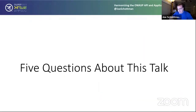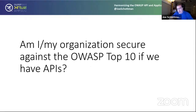To let you know what this talk is about, I'm going to start with five questions. The first: am I or my organization secure against the OWASP top 10 if we have APIs? I work in banking, so we're highly regulated and get questions from auditors like that. In 2019 OWASP brought out an API-specific top 10 list, but there's overlap with the application top 10 — you have to draw from both to get full coverage.